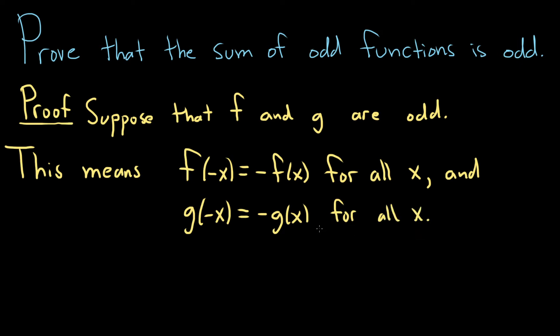Now that we've written down what it means for our functions to be odd, we have to look at the sum. Recall that if we have a function f and a function g, and we put a plus sign between them, that's the sum of the functions. The sum takes an element x and spits out f(x) + g(x). The input is x, the output is the sum, denoted (f+g)(x).